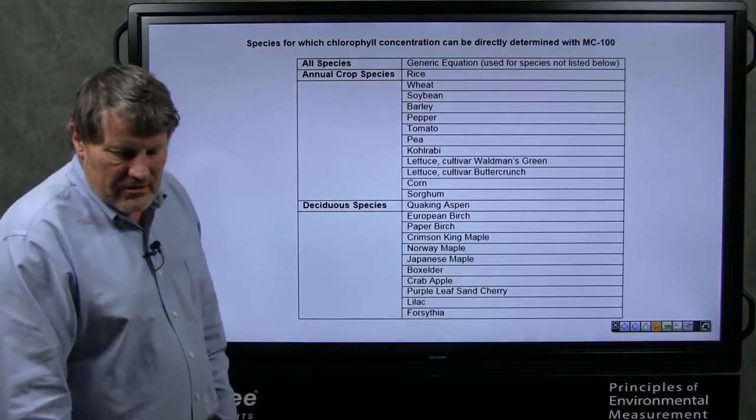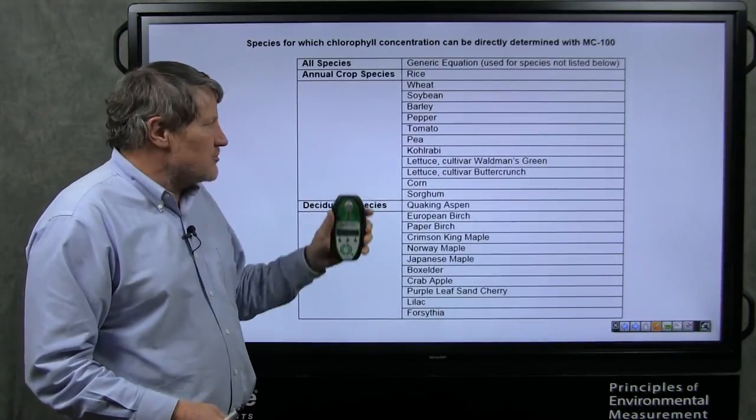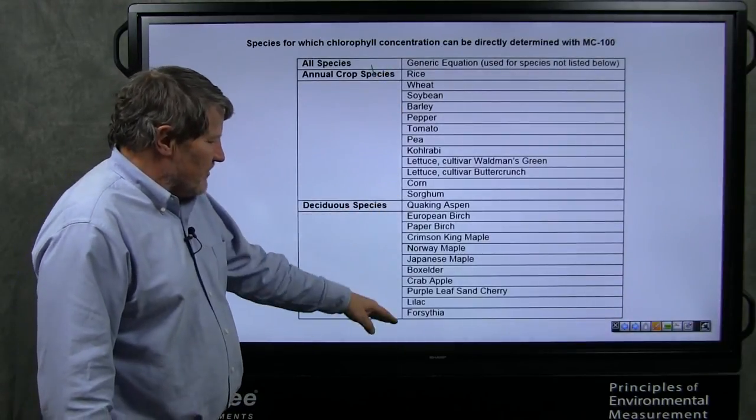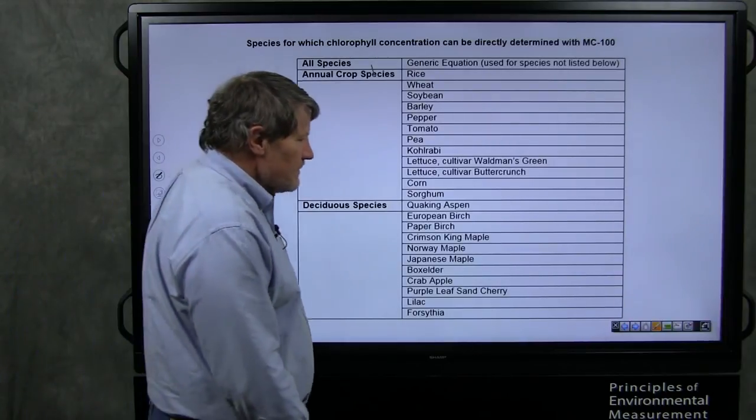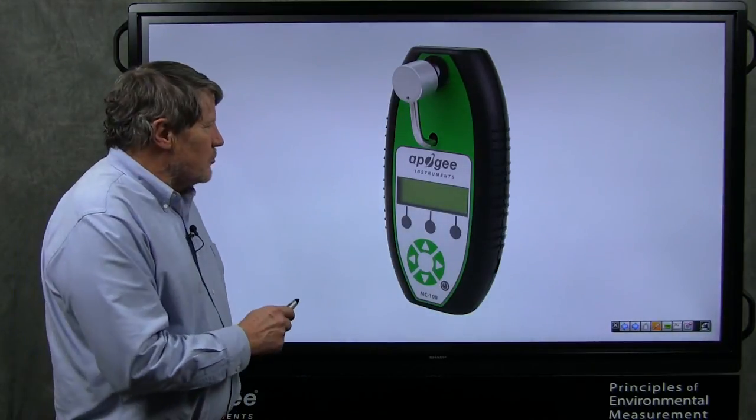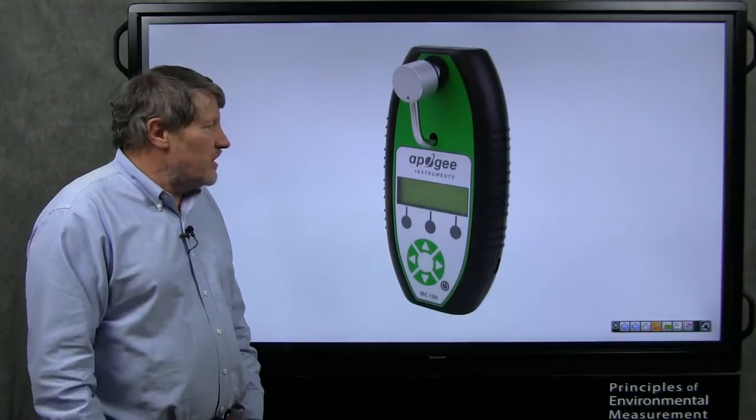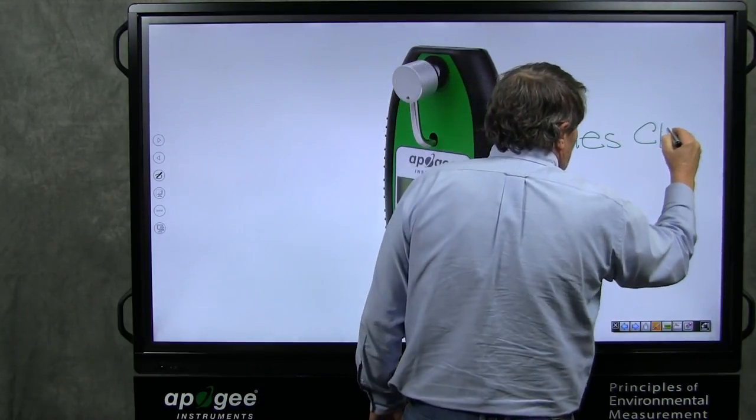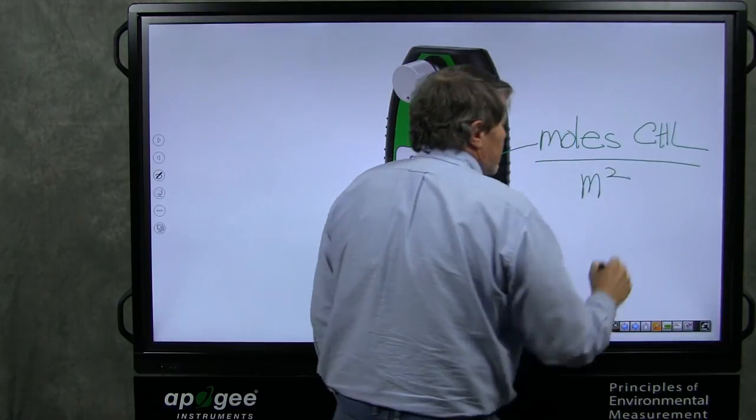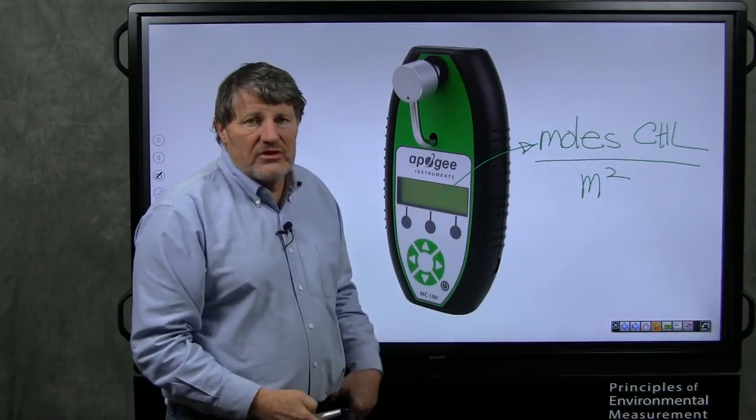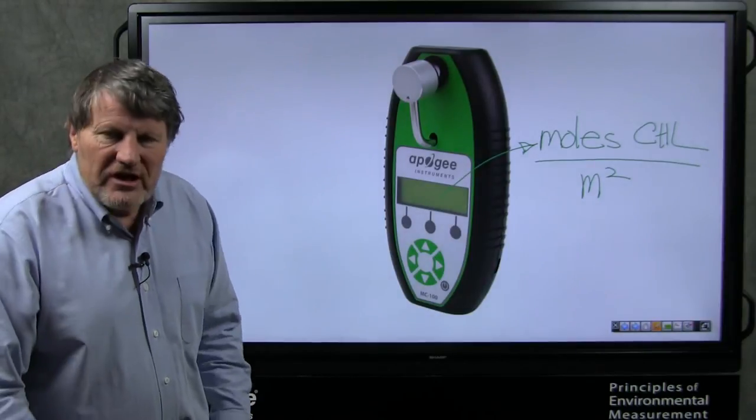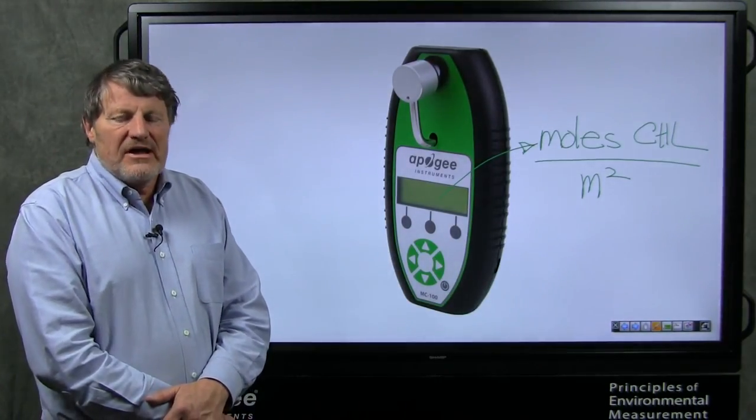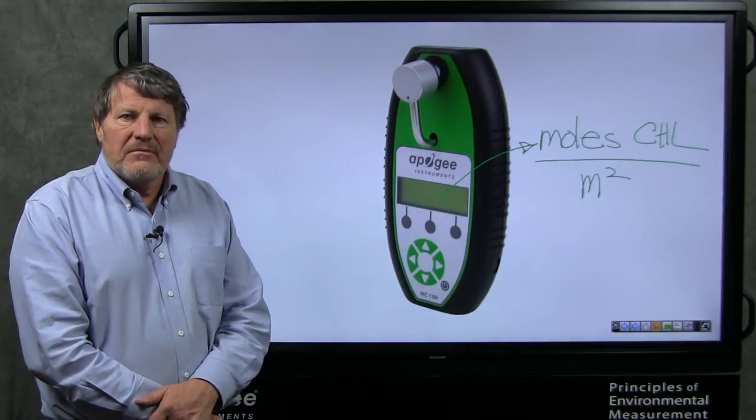These are the species in the Apogee meter for which we have equations. We're working on additional equations for this. There's generic equations in here. The major annual crop species are in here. There's a number of deciduous species also in this. So, that's a summary of what we had to do to get to this point, to make this meter read out in moles of chlorophyll per meter squared, which is what you get with the spectrophotometer, and it's now what you get with this non-destructive optical meter. For details, I refer you to our paper in Plant Cell and Environment. Contact Apogee for a copy of the paper, and it's also available on the internet. Thanks for listening. We look forward to another visit.